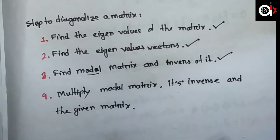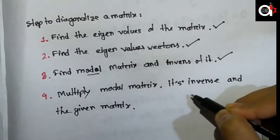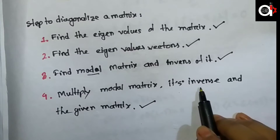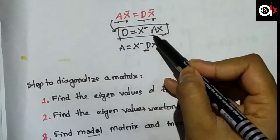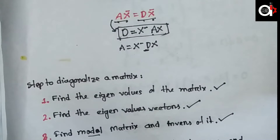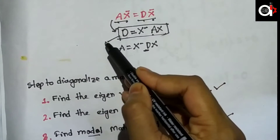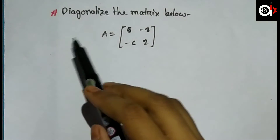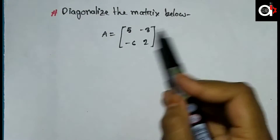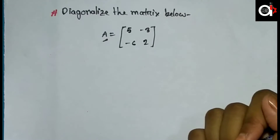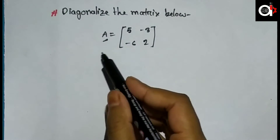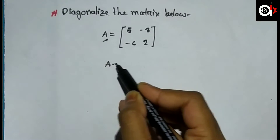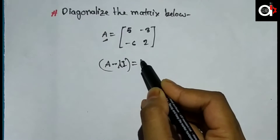This is the modal matrix. Its inverse times the given matrix A, multiplied again by the modal matrix, gives us the diagonal matrix D. The steps to diagonalize are: first, find the eigenvalues of the matrix.